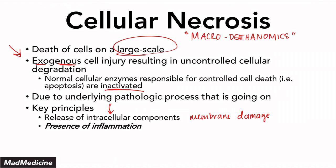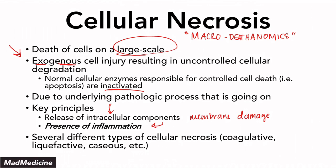You will also have the presence of inflammation. These intracellular components activate nearby cells, which call in white blood cells like neutrophils, lymphocytes, and macrophages to address what's happening — leading to inflammation in that area. There are several different types of necrosis, including coagulative necrosis, liquefactive, and caseous. We cover all of them in the upcoming video, where you can see how they look on pathology and histology slides.